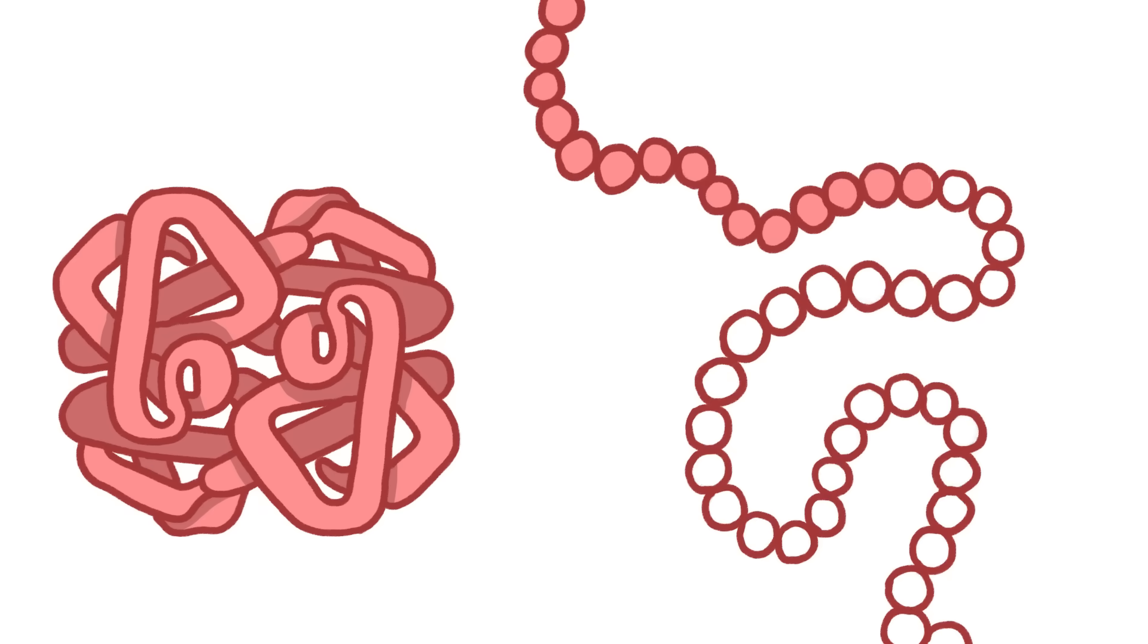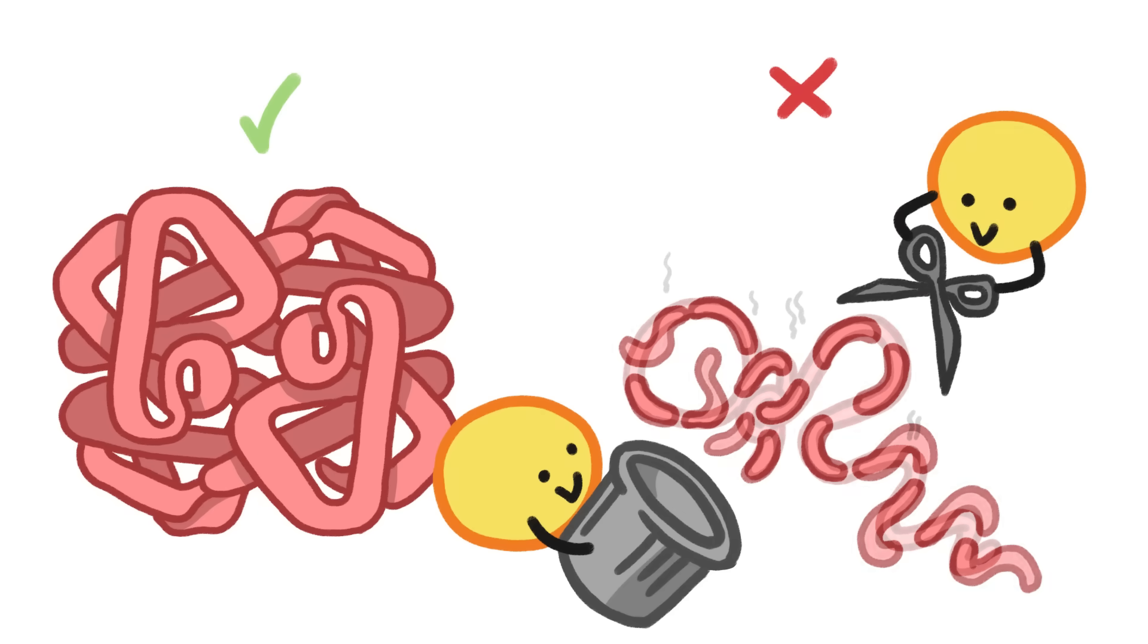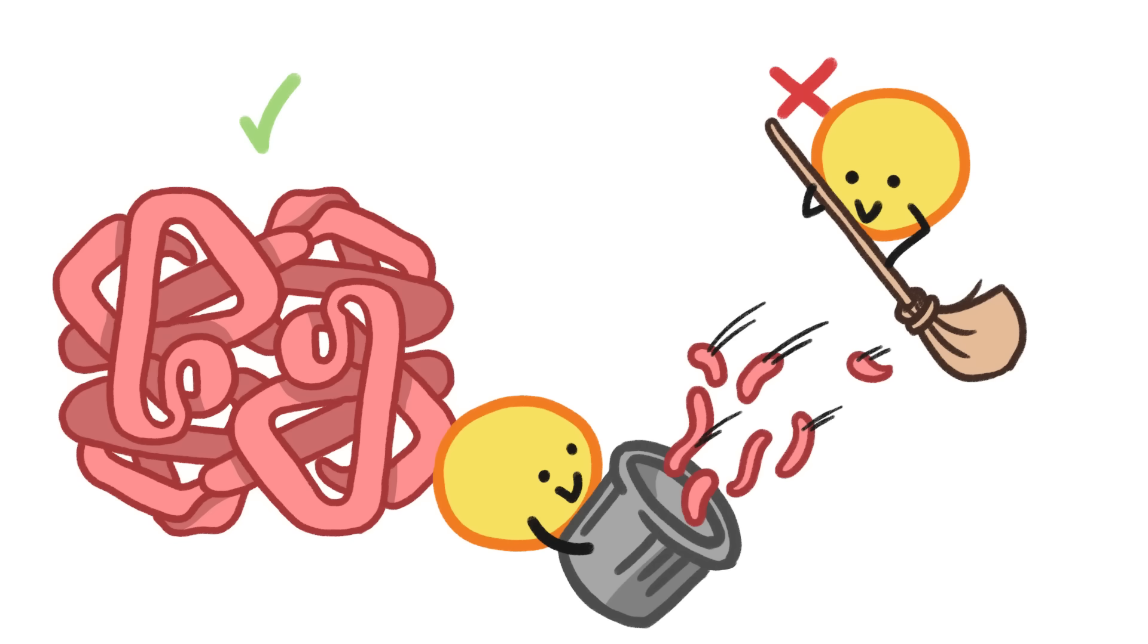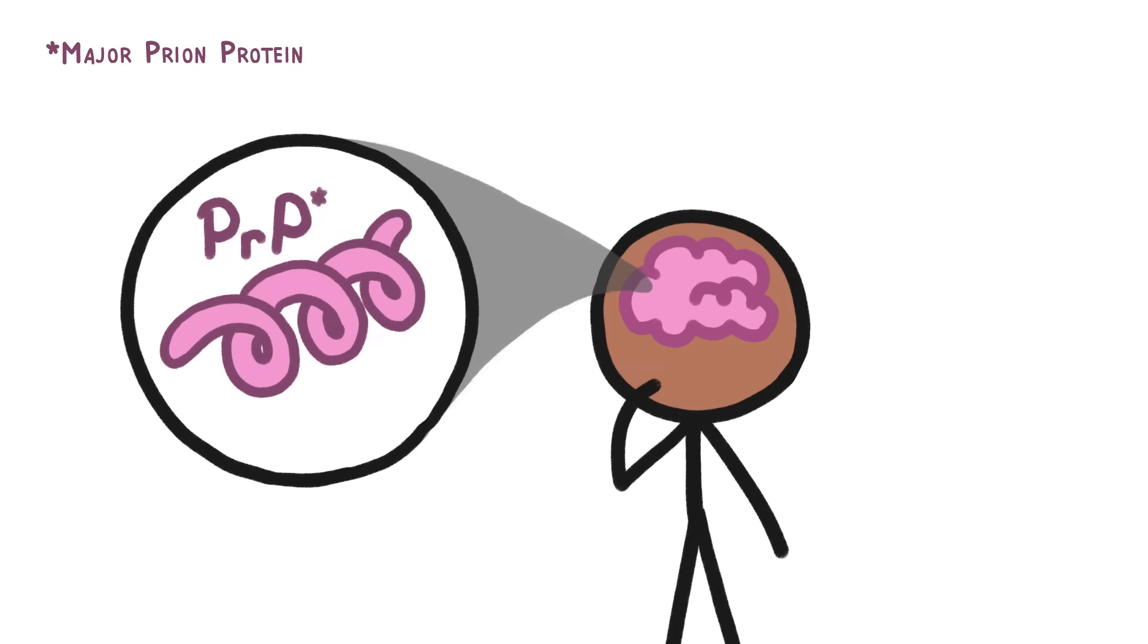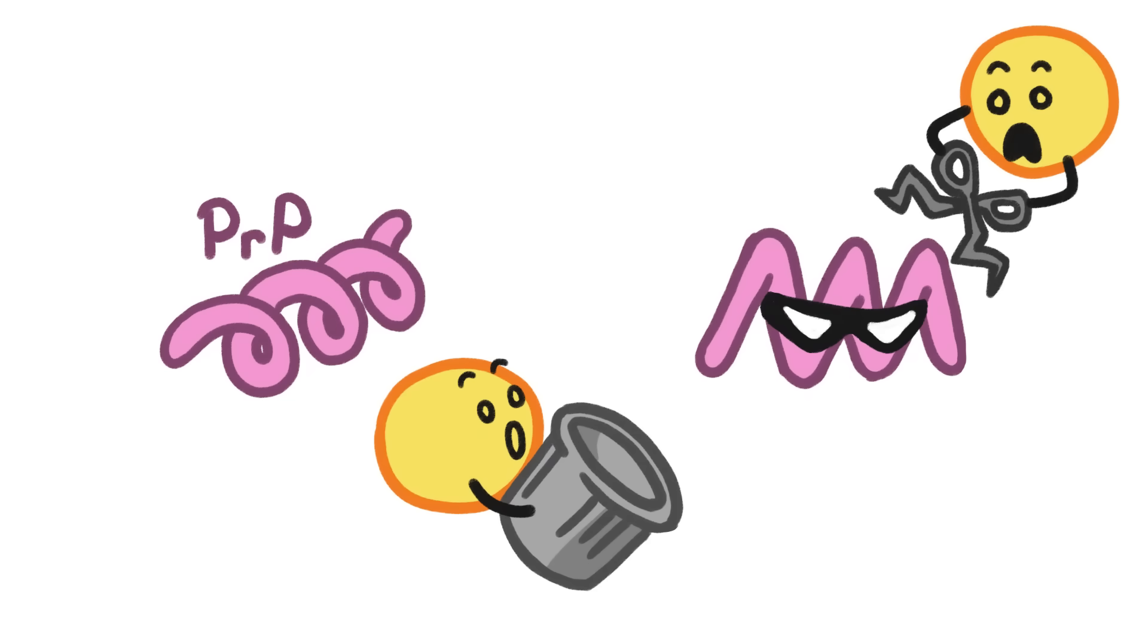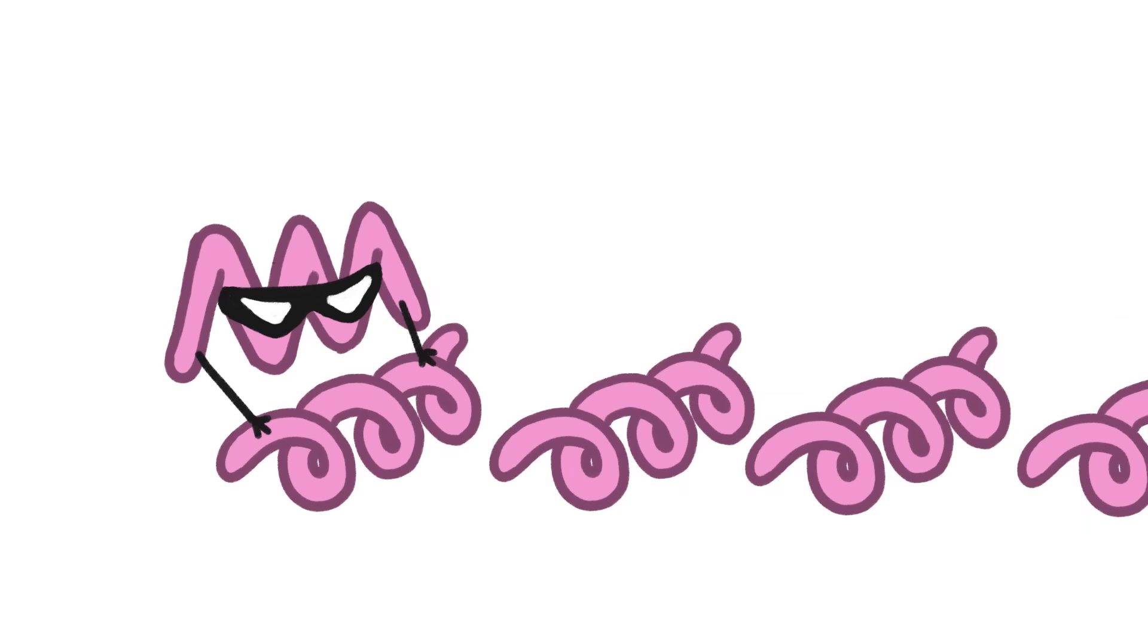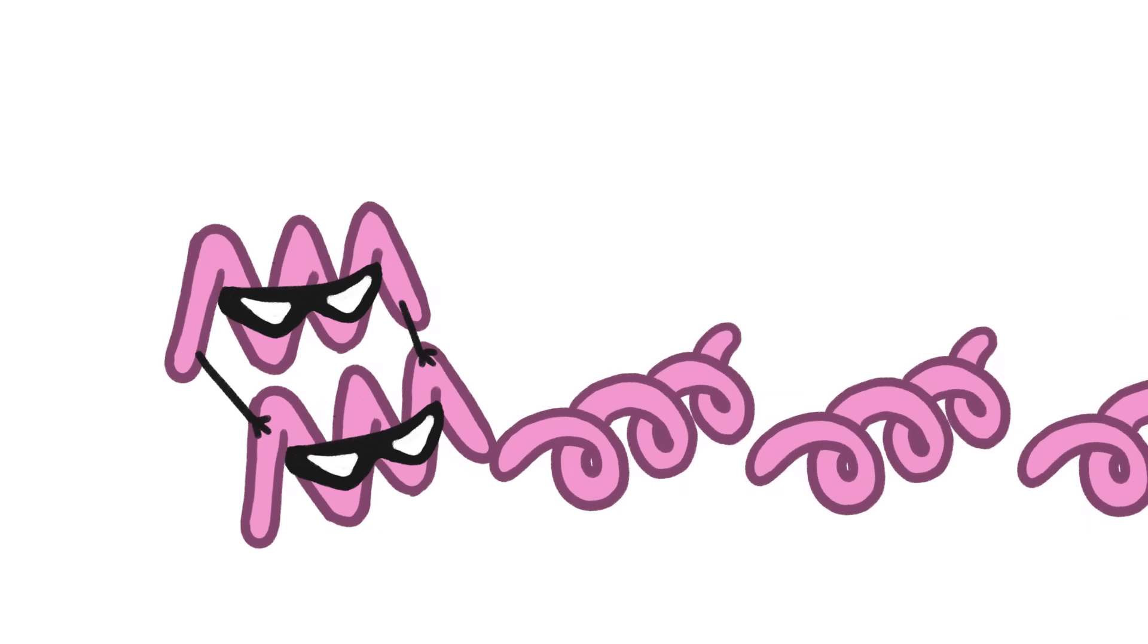But on occasion, the origami goes awry and a protein gets folded up wrong. Generally, the body just clears the misfolded protein away, but not in the case of one specific protein in the brain. For reasons we don't totally understand, if one of these proteins misfolds, it persists and goes rogue. Whenever it comes across another protein of its type, it will refold that normally functioning protein into the same shape as itself, starting a massive chain reaction.